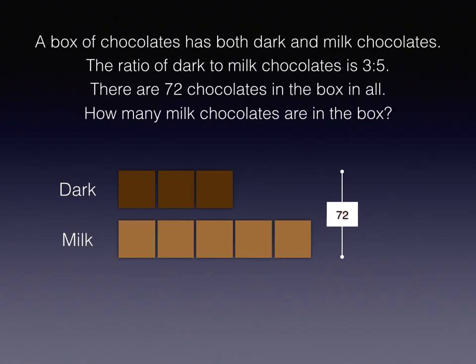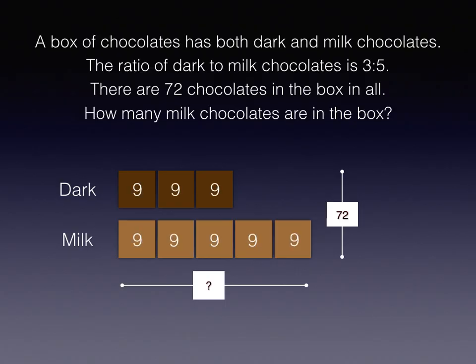Looking at the 72 — this is a bigger box of chocolates, of course. In my diagram, there are 8 blocks. 72 divided by 8 equals 9. That will help me figure out how many milk chocolates there are in the box. Every block is represented by 9 chocolates. And for milk chocolates, there's 9 times 5, or 45 milk chocolates in the box.